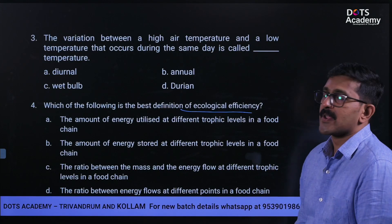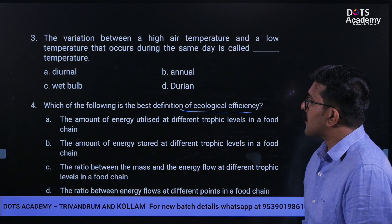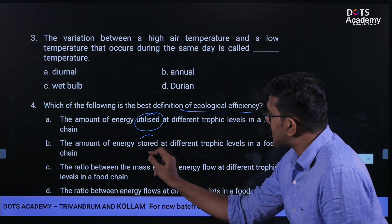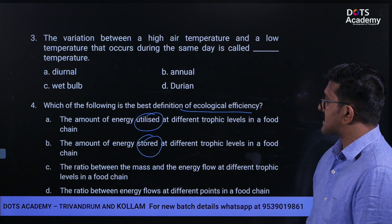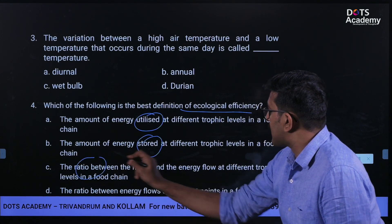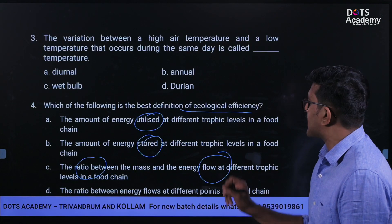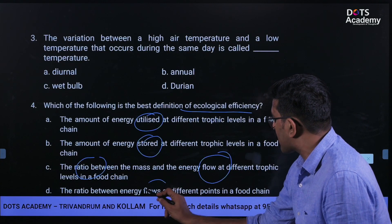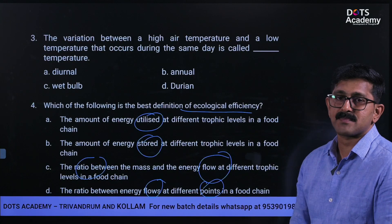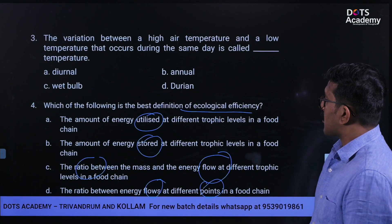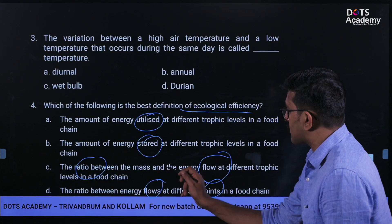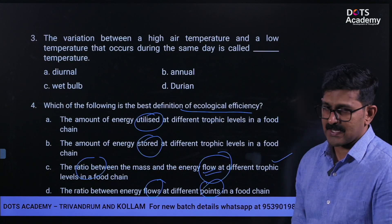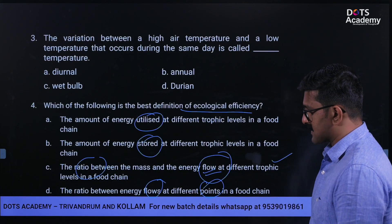Which of the following is the best definition of ecological efficiency? Options: A) Amount of energy utilized at different trophic levels in a food chain; B) Amount of energy stored at different trophic levels in a food chain; C) The ratio between mass and energy flow at different trophic levels in a food chain; D) Ratio between energy flows at different points in a food chain. Ecological efficiency represents the ratio between mass and energy flow at different trophic levels in a food chain. Option C is the correct answer.